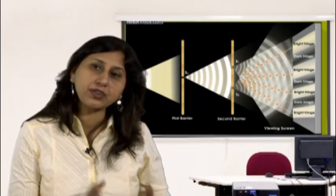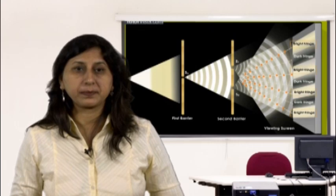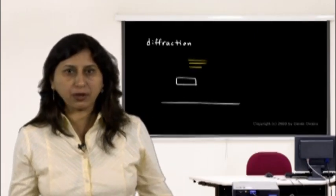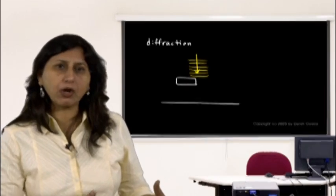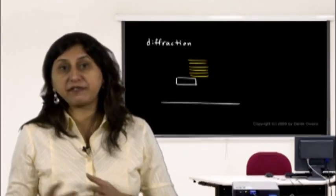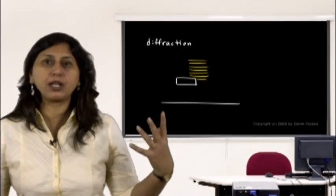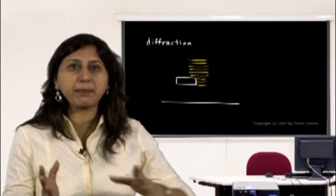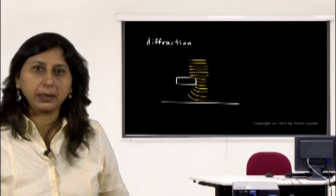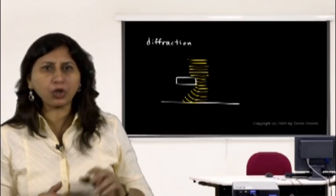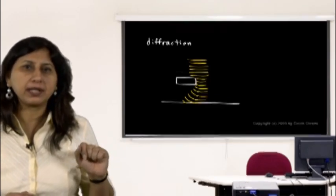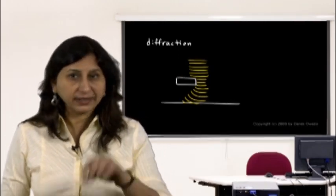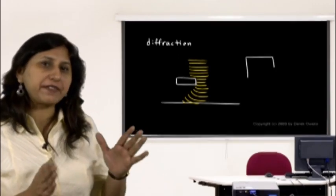Diffraction is the bending of light around corners. Think of light as a wave — like waves in the ocean. When light hits the edge of an object, it is partly blocked, creating a shadow, but some light bends around the corners. This bending is called diffraction. The shadows produced do not have perfectly well-defined edges; the edge of the shadow is slightly fuzzy because some light bends around it.